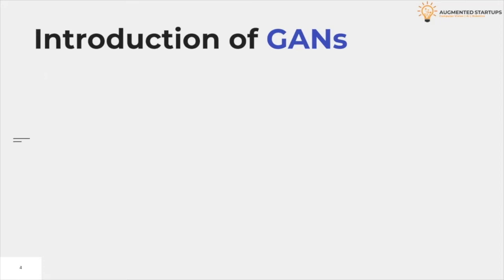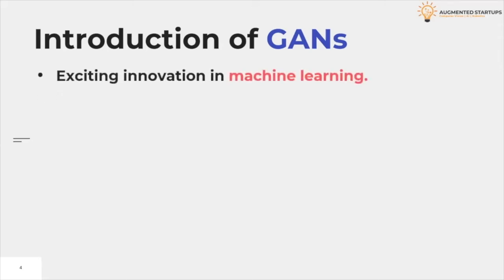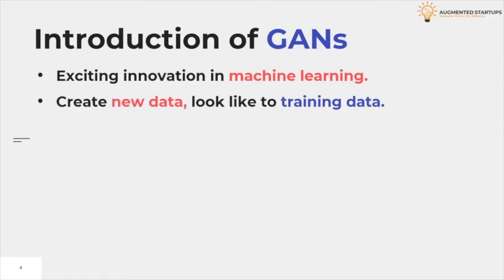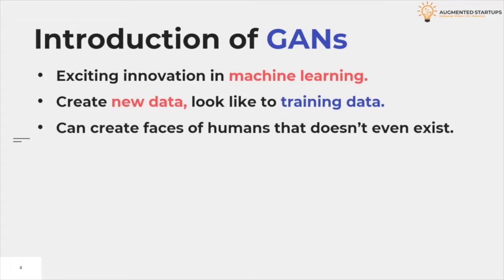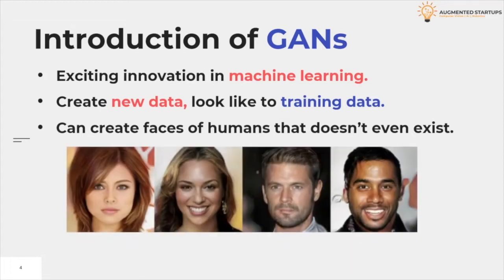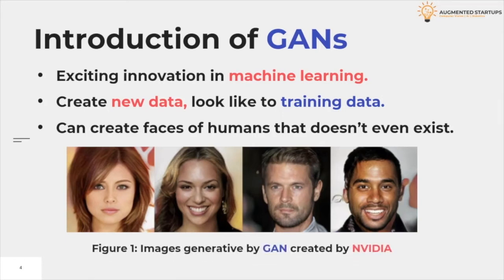Generative adversarial networks, also called GANs, are an exciting recent innovation in machine learning. GANs are generative models — they create new data instances that resemble your training data. For example, GANs can create images that look like photographs of human faces even though the faces don't belong to any real person. As shown in Figure 1, these images were created by a GAN.